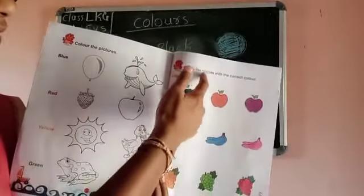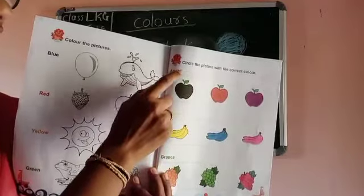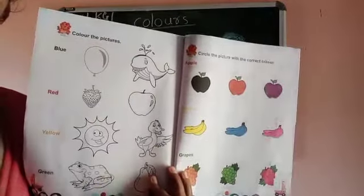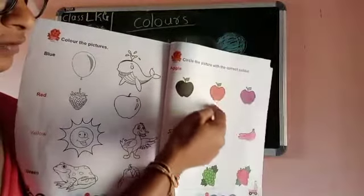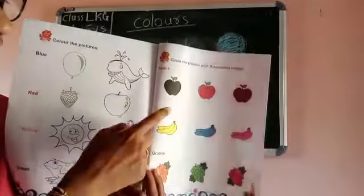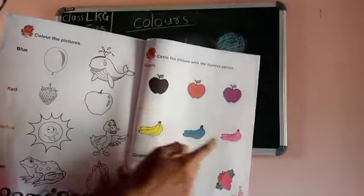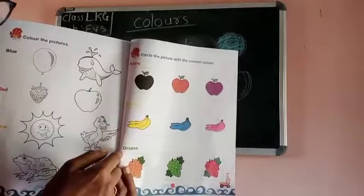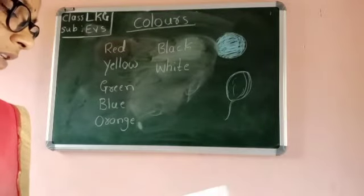Children, circle the pictures with the correct color. Apple — what is the color? The apple color is red, so you circle the red color. And banana — which color is banana? Yellow. Banana is yellow. Next — the grapes are green, you color the grapes green.